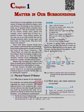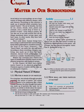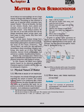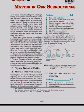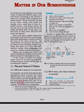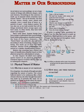1.1 Physical Nature of Matter. 1.1.1 Matter is made up of particles. For a long time, two schools of thought prevailed regarding the nature of matter. One school believed matter to be continuous like a block of wood, whereas the other thought that matter was made up of particles like sand.